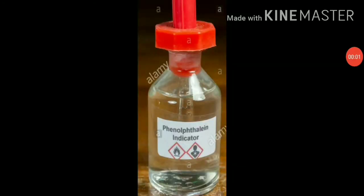Let's talk about one more example of a synthetic indicator: phenolphthalein. Phenolphthalein is the most commonly used synthetic indicator. Phenolphthalein is colorless, and in acidic solution it remains colorless. But it imparts a pink color in basic solution. In this way, we can use synthetic indicators for testing acidic and basic solutions.